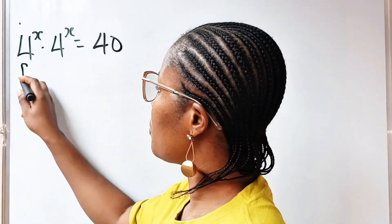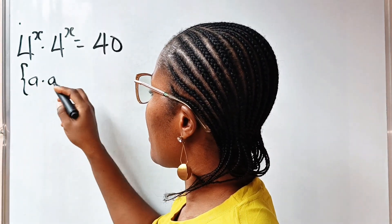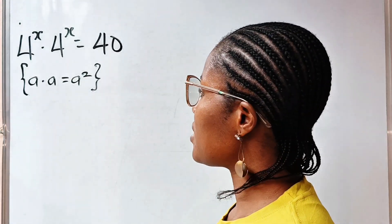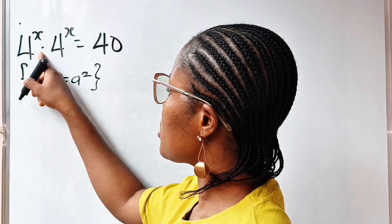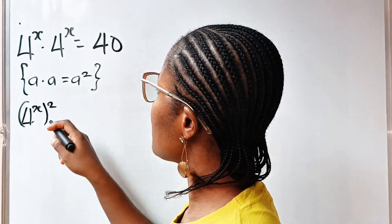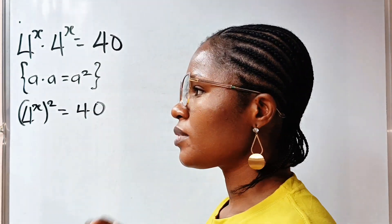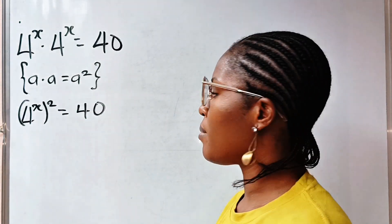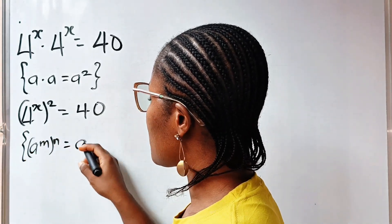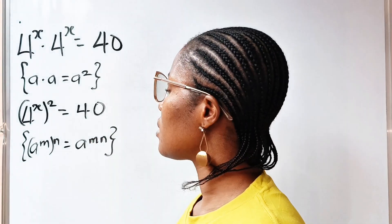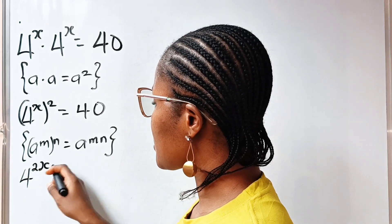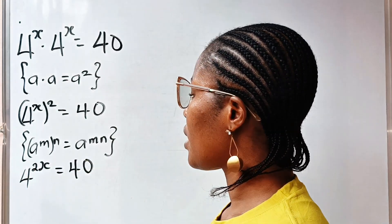First, recall that a multiplied by a is equal to a squared. So 4 to the power of x multiplied by 4 to the power of x becomes 4 to the power of x, squared. Applying the rule that a to the power of m raised to the power of n equals a to the power of m times n, this gives us 4 to the power of 2x equals 40.